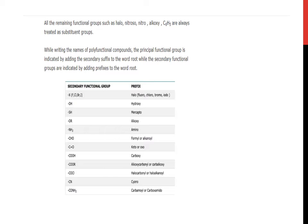While writing the name of polyfunctional compounds, the principal functional group is indicated by adding the secondary suffix to the word root, while the secondary functional groups are indicated by adding the prefix to the word root. For example: X is halo, OH is hydroxy, SH is thiol, OR is alkoxy, NH2 is amino, CHO is formyl, CO is keto or oxo depending if it is principal or substituent.